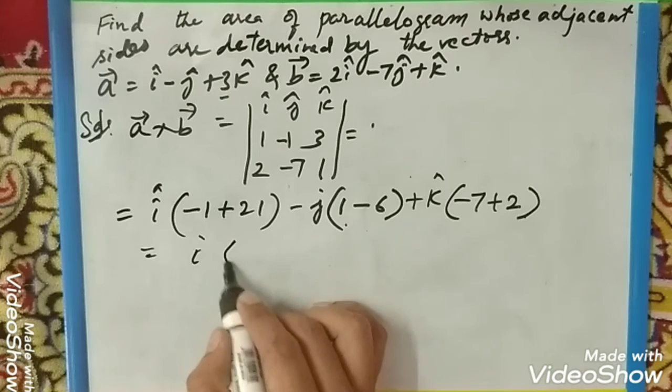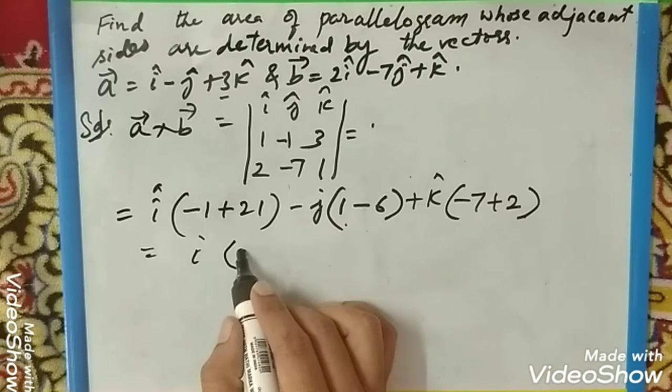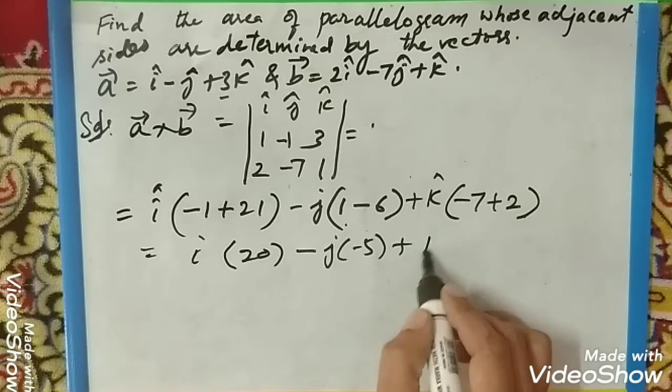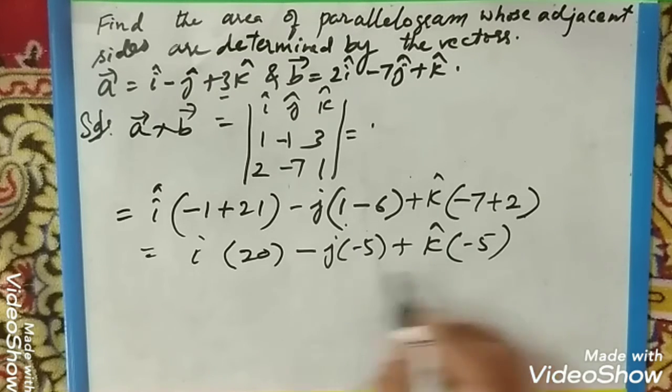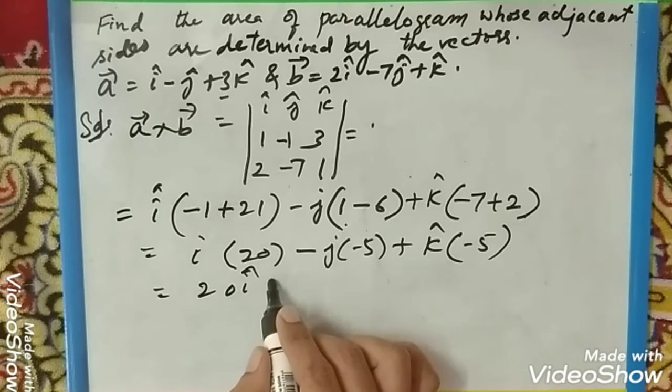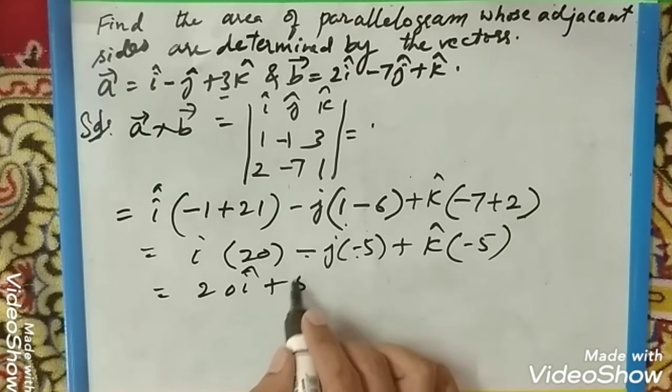Your answer will be i, it's plus, -1 + (-21) = -22, so 22i - j into -5, which is plus 5j, and -5k.